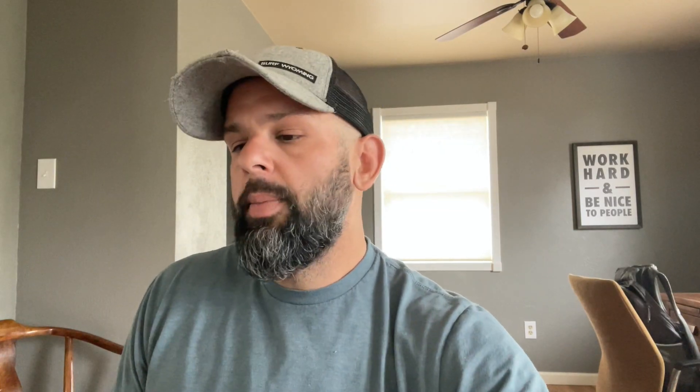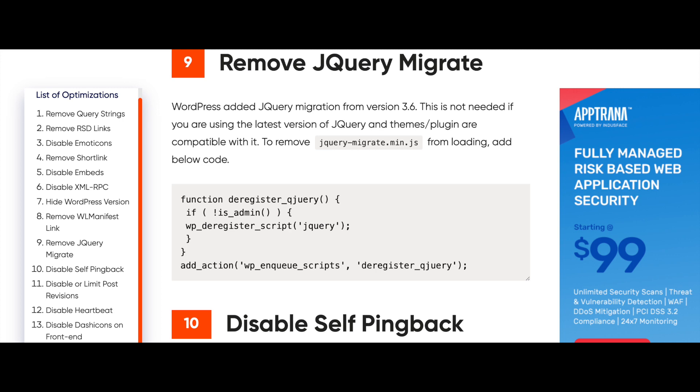I'm going to link a website here by Geek Flare — they have a blog post titled '14 WordPress Performance Optimizations to Do Without a Plugin.' Anytime you can optimize without a plugin, it's a good thing to do because plugins interfere, they bloat, they can slow it down, they can cause vulnerabilities to your site. So the fewer plugins, the better. He provides in this 14 things, everything from removing jQuery Migrate to limiting post revisions, disable heartbeats, disable Dashicons on the front end, remove query strings — it's got a lot of things it can do.